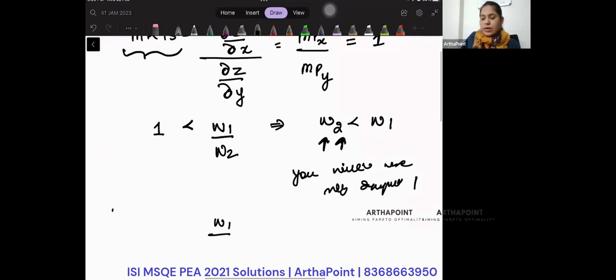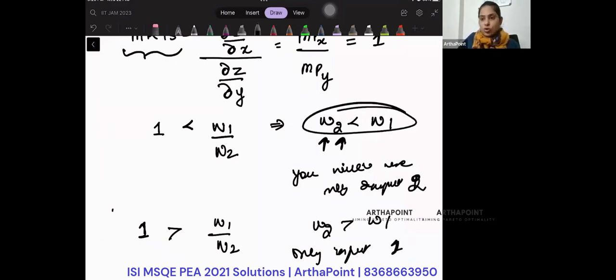And if W1 by W2 is greater than 1, which means W2 is greater than W1, you will use only input 2. Input 2 is cheaper. You will use only input 1 when input 1 is cheaper.